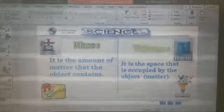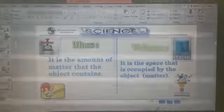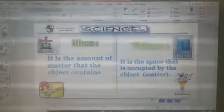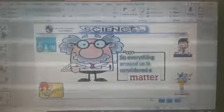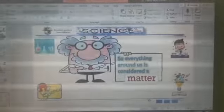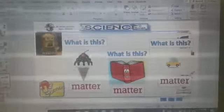Mass is the amount of matter that the object contains. What about volume? It is the space that is occupied by the object. So everything around us is considered matter. Matter like what? Like this ice cream.